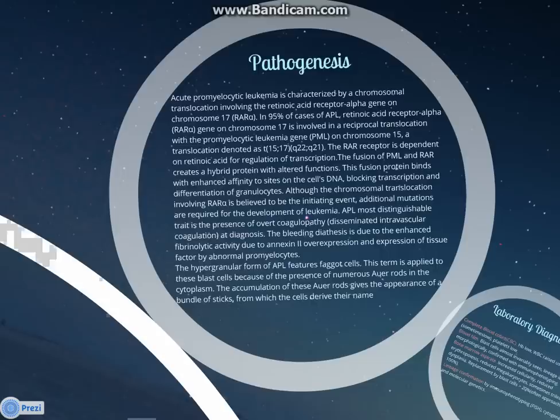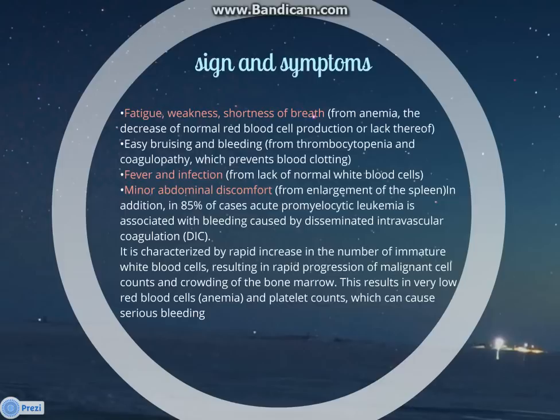Signs and symptoms of promyelocytic leukemia: fatigue, weakness, and shortness of breath due to anemia; easy bruising and bleeding due to thrombocytopenia and coagulopathy; fever and infection due to decreased white blood cell count; and minor abdominal discomfort due to enlargement of the spleen. Promyelocytic leukemia is characterized by rapid increase in immature white blood cells, resulting in rapid progression of malignant cell count and crowding of the bone marrow, causing very low red blood cell and platelet counts which can cause serious bleeding.